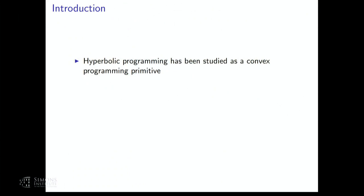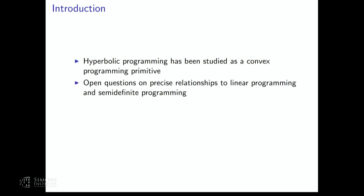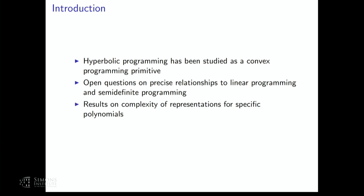The motivation for this work is studying hyperbolic programming as a convex programming primitive. As we've seen, there are lots of open questions on the precise relationship between hyperbolic programming and semi-definite programming. There are some results in this field — one such result concerns the complexity of representations for specific polynomials. By complexity of representation, I mean size of the representation. The generic question we set out to answer, or partially answer, is: what kind of worst-case complexity can we expect?